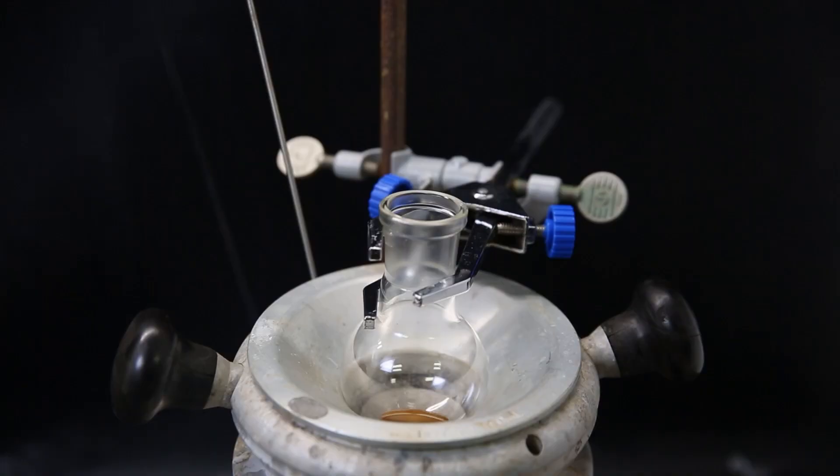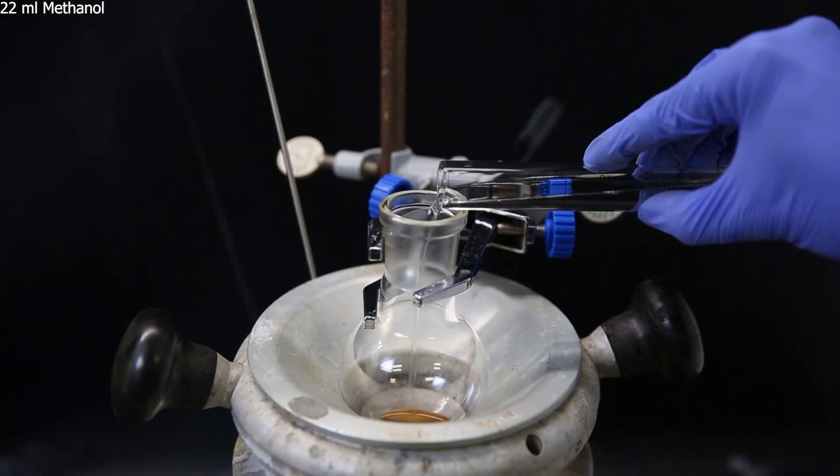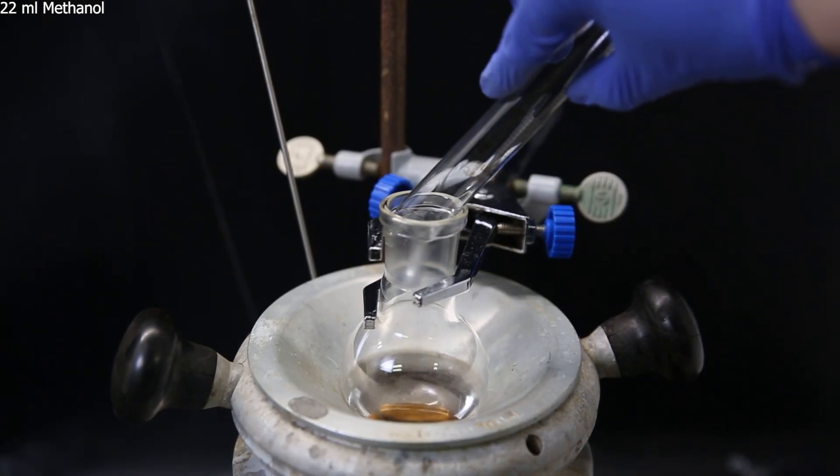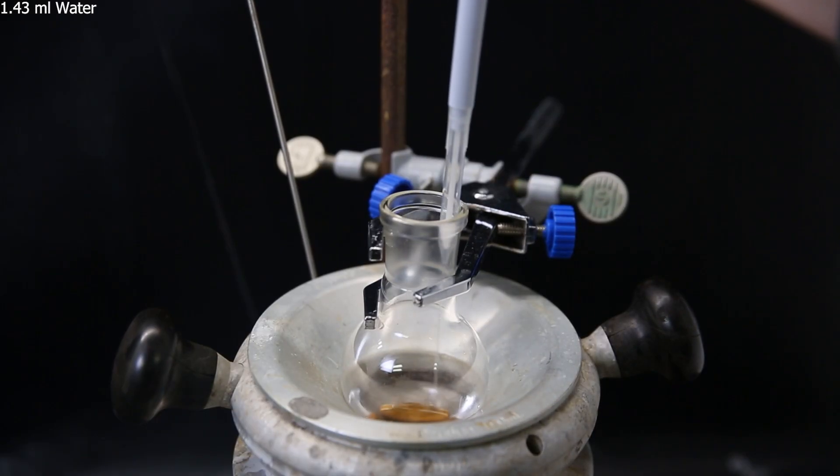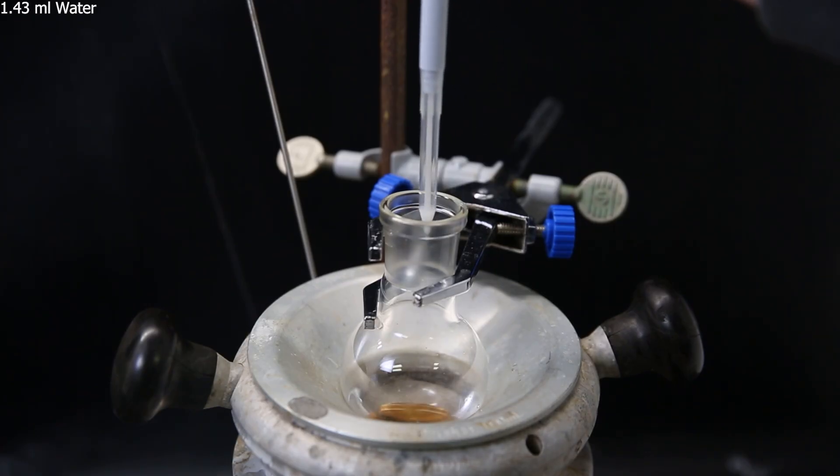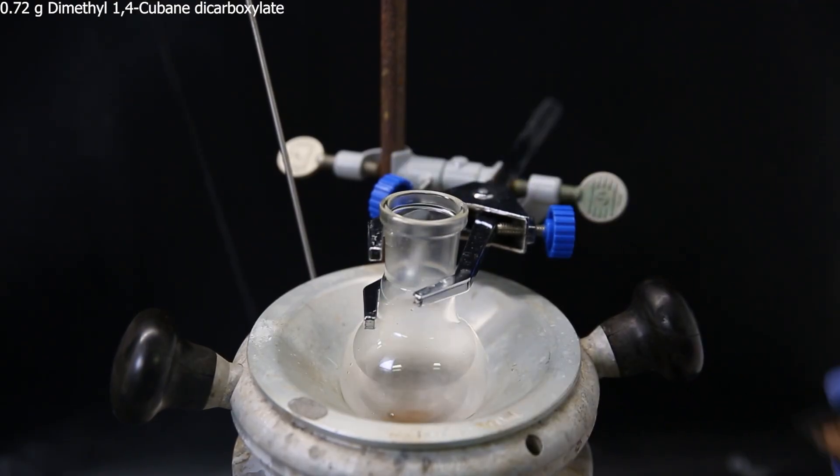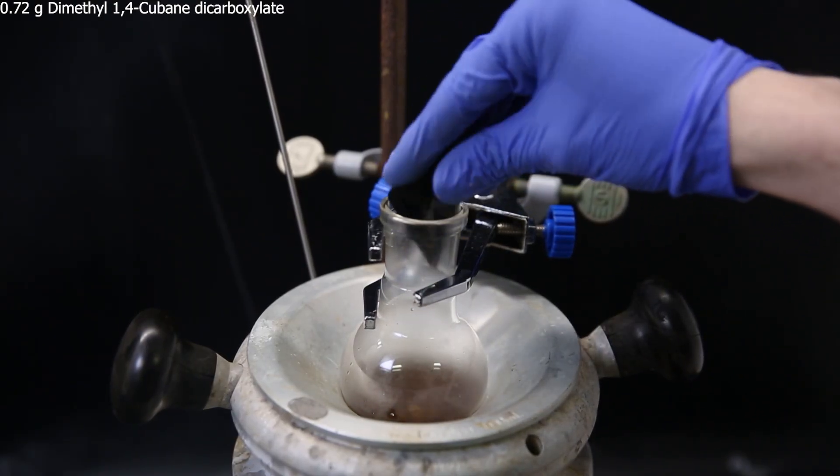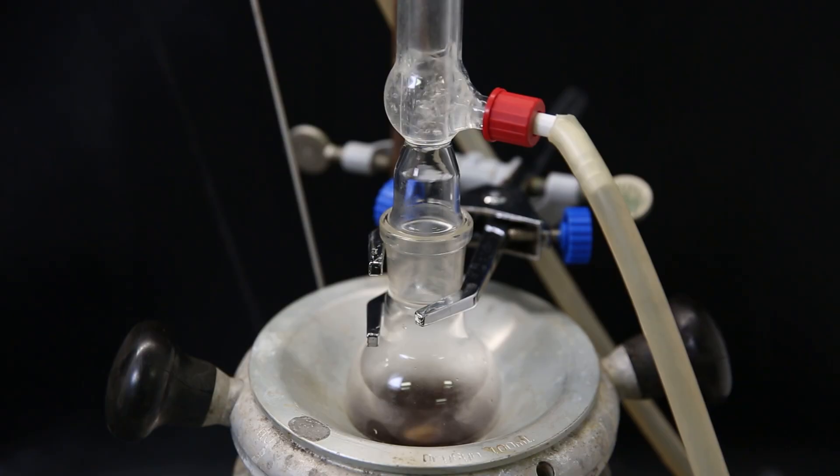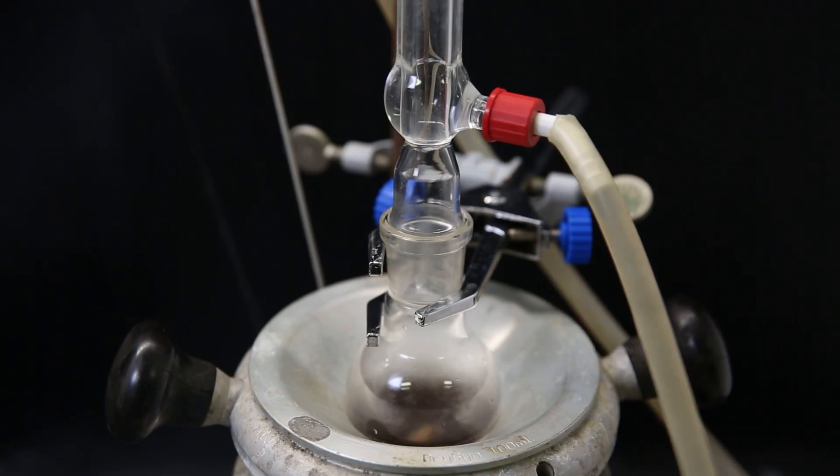So I set up a flask in the heating mantle with a stir bar and add in 22 ml of methanol. I then add in 1.43 ml of water and 0.54 grams of sodium hydroxide, and last, all of the methyl ester I just made. I attach a condenser and then reflux the mixture for 5 hours.